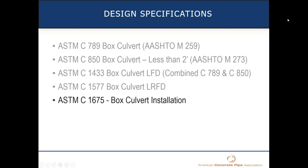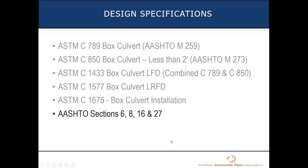C1577 is the one we use most commonly because most DOTs and municipalities reference that LRFD HL93 live load. For design. When we get to installation, the C1675 spec covers that. AASHTO LRFD sections 3, 4, 5, 12, and 14 are what we design to on the AASHTO side. ASCE 2697 is also one we look at when choosing which designs to go with.